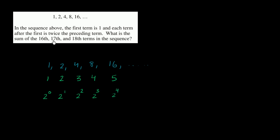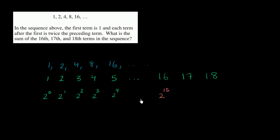So if we were to go to the 16th, 17th, and 18th terms — the 16th term is going to be, if we just follow this pattern right over here, it's going to be 2 to the 1 less than the term power. When it's the fifth term, it's the fourth power. When it's the fourth term, it's the third power. So the 16th term is going to be 2 to the 15th power, the 17th is 2 to the 16th power, and the 18th is 2 to the 17th power.